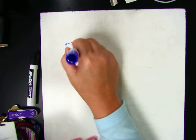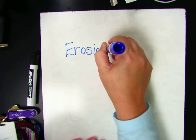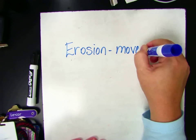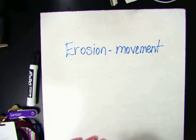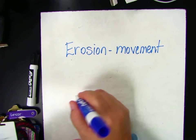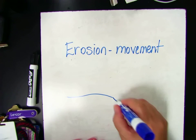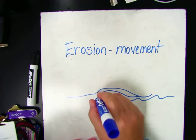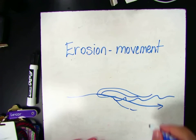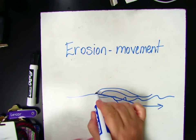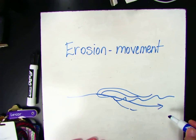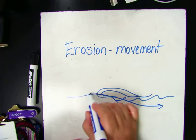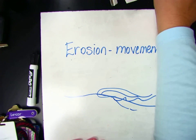Another thing we talked about is erosion — how the earth changes. Erosion is the movement of rocks and the earth. One of the finest examples here in Florida is the beaches. The water comes in, and as the tides come in and go back, they take the sand back down into the ocean. That's erosion — the sand is moving from our beaches back into the ocean, so we lose a chunk of our beach every year. We're always fighting beach erosion.